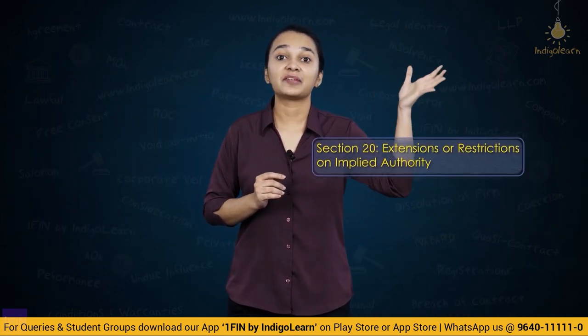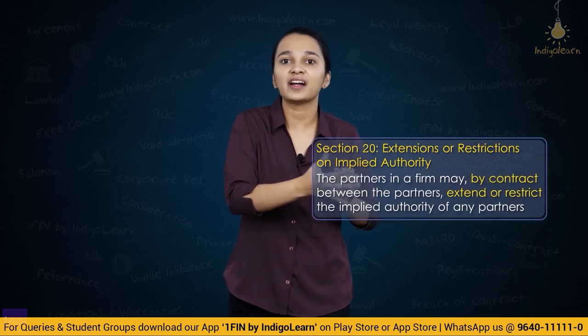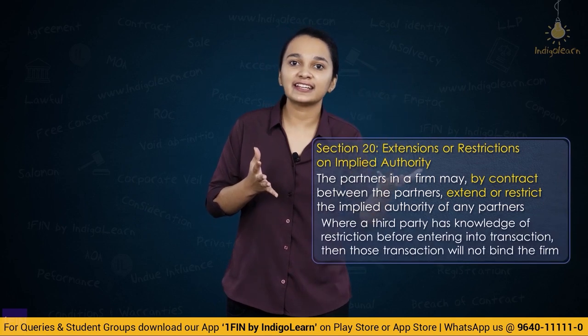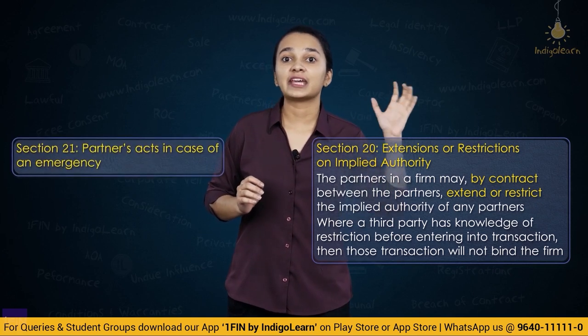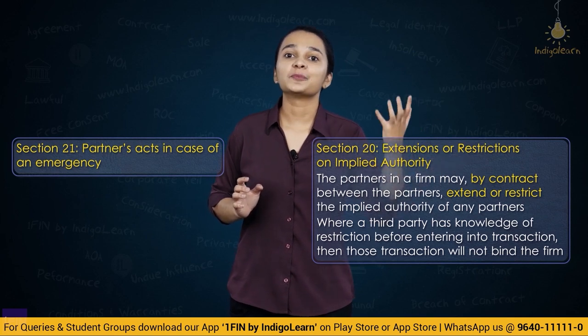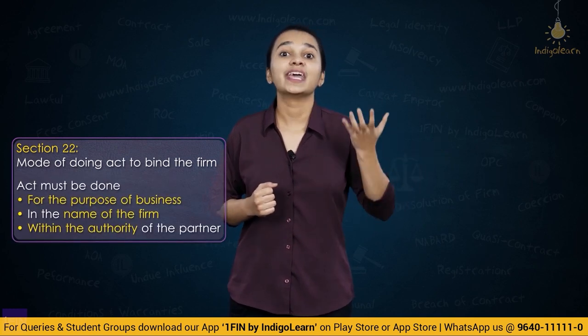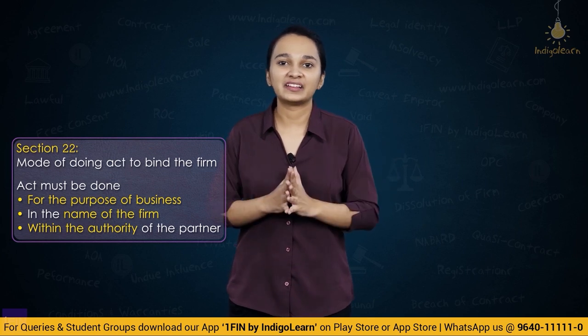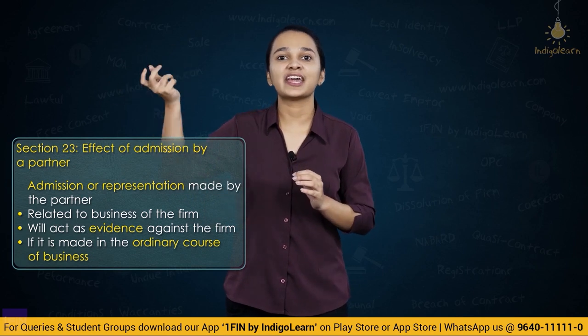Section 20 says there can be extensions or restrictions on implied authority with the consent of all partners. If a third party has knowledge of the restriction and still enters into a transaction, that transaction will not bind the firm. Section 21 covers a partner's acts in an emergency — if acting prudently in an emergency, the partner will bind the firm. Section 22 says the transaction must be done for the purpose of the firm's business, in the name of the firm, and within the partner's authority. Section 23 covers admissions — if a partner makes a representation, it can bind the firm and be used as evidence against it.